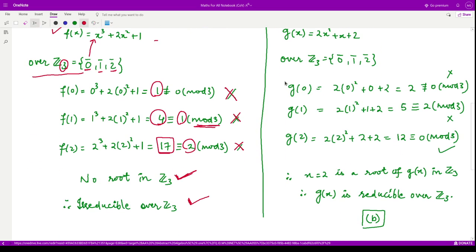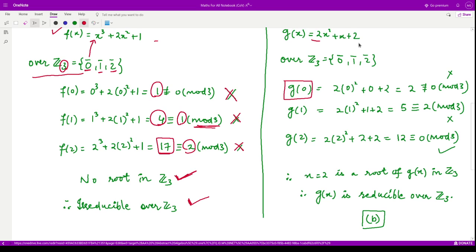Again, we will look for g(0). You plug 0 into this polynomial, you will get 2, which is not equal to 0 mod 3. Therefore, this is not a root. When you see g(1), it comes out to be 5. When you divide 5 by 3, you will get 2 as remainder, so it is also not equal to 0 mod 3. This is also not a root.